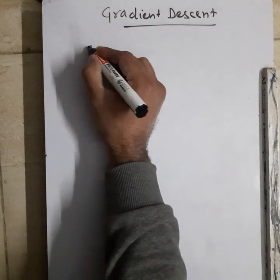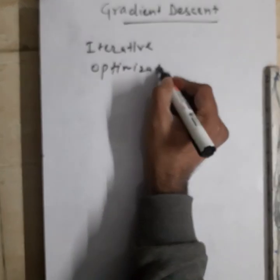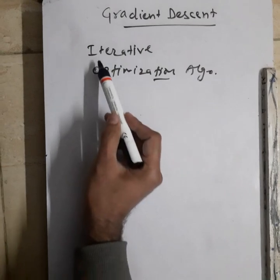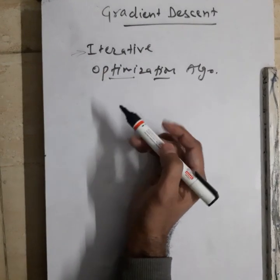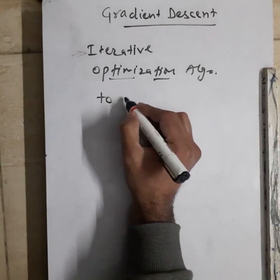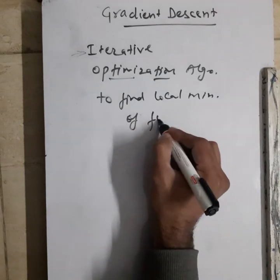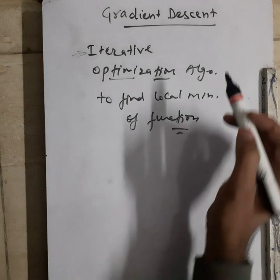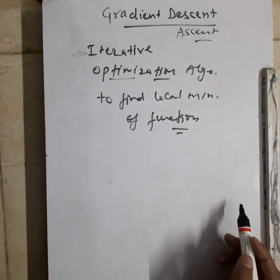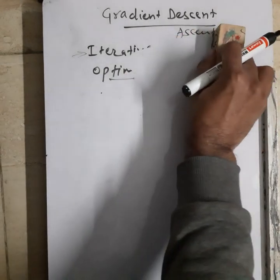Gradient descent is basically an iterative optimization algorithm. This means that this algorithm works in iteration to achieve the optimization. What we do is find the local minimum value of a function. If we have to find the local maximum, that algorithm is named differently. Today we are discussing gradient descent, which is used in machine learning algorithms in a lot of places.